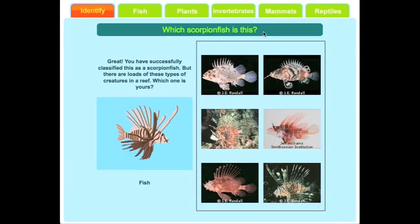Finally, after they have chosen the correct fish — in this case a scorpion fish — they must decide which species of scorpion fish it is. Students must again use observational skills to successfully identify their exact species.